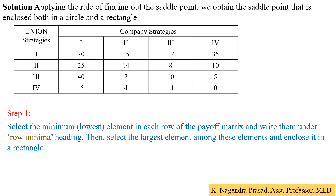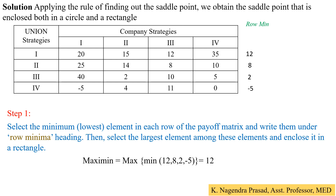Computing the row minima: the first row minimum is 12, the second row minimum is 8, the third row minimum is 2, and the fourth row minimum is minus 5. Among these values — 12, 8, 2, and minus 5 — the maximum value is 12. So 12 is the maximin value.